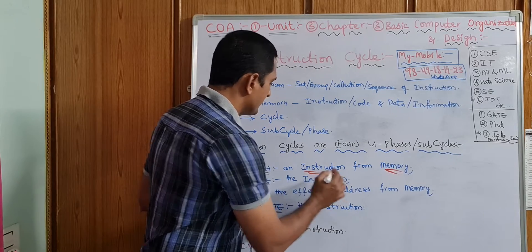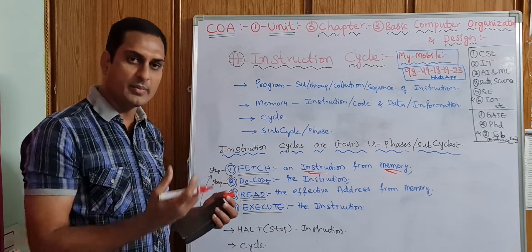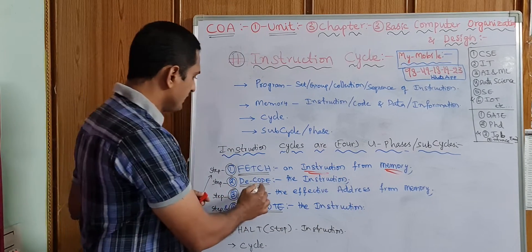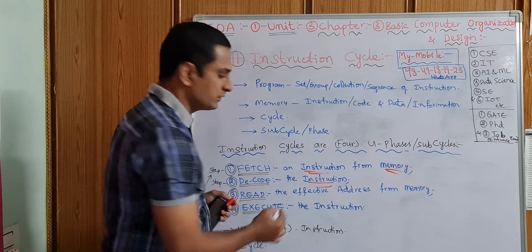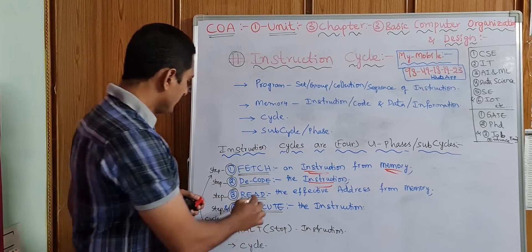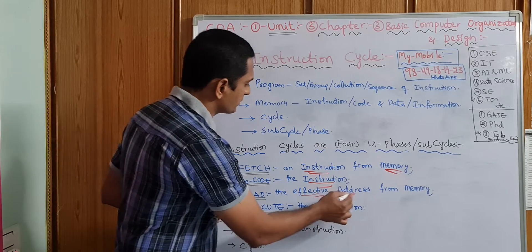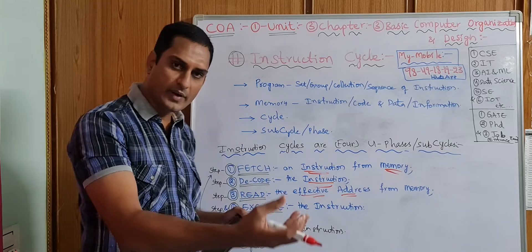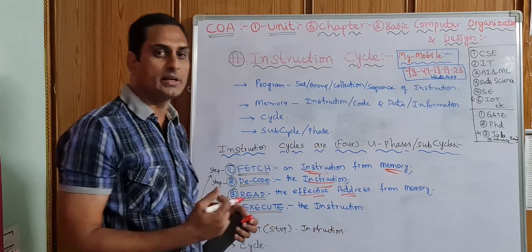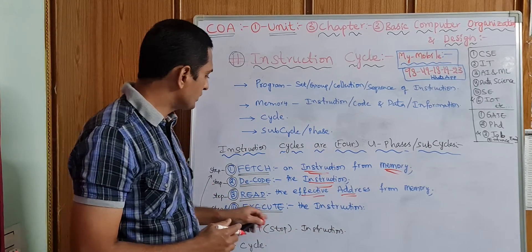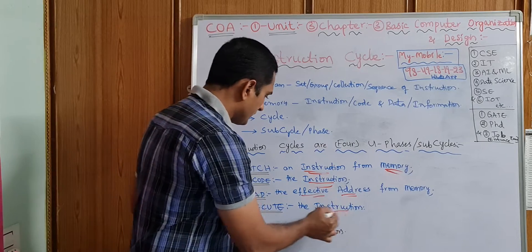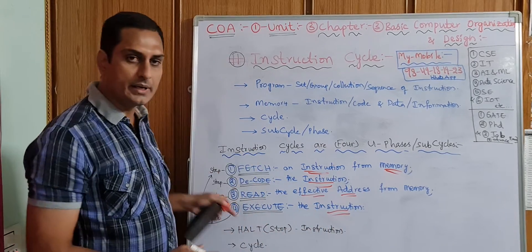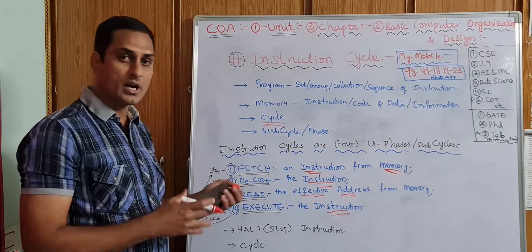Fetch: fetch an instruction from the memory. Take from the memory, access from the memory, gain from the memory. Decode: decode the instruction. It will be in encode form. We need to decode it. Then read: read the effective address. We have effective address in the memory. Effective means direct address.